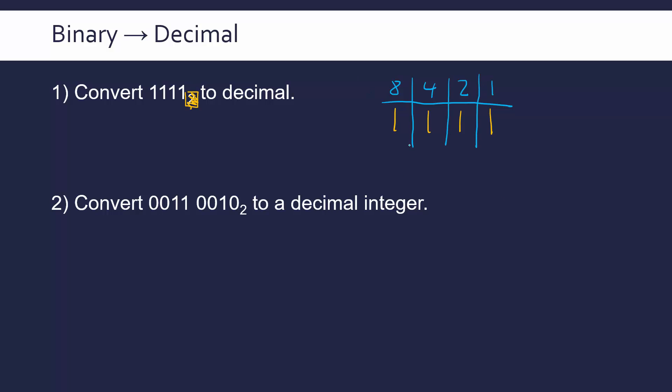Now it's really easy to figure out what this number is in decimal because all I do is add up the column heading when I've got a 1 written underneath. Now here I've got a 1 written underneath all of them, so I just need to add up 8 plus 4 plus 2 plus 1, which is 15. And I could do a little subscript of 10 to show them in base 10.